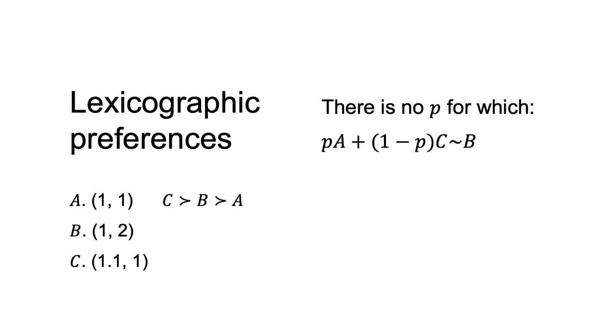There is no P for which P times A plus 1 minus P times C is equally as good as B. When P equals 1, B is strictly preferred to A. For any P less than 1, P times A plus 1 minus P times C is strictly preferred to B, as any non-zero share of C makes the combination of A and C preferred.